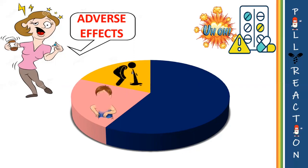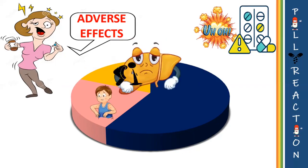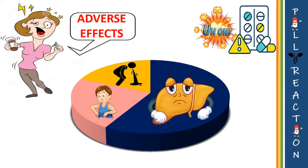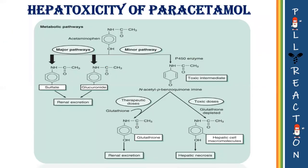The major adverse effect is hepatotoxicity. Apart from this, in therapeutic doses, paracetamol has negligible toxicity in most patients. However, when taken in overdose or by patients with severe liver impairment, the drug is a dangerous hepatotoxin. Now we will look at the hepatotoxicity of paracetamol in detail.